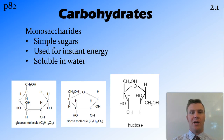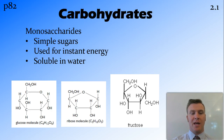Here are three different monosaccharides, and you can see they all have a similar structure in that they are a ring — a carbon ring that has an oxygen inside it. Glucose is a six-carbon ring, while ribose and fructose are five-carbon rings.